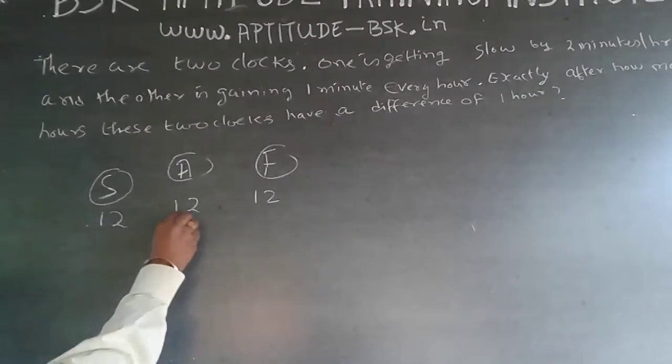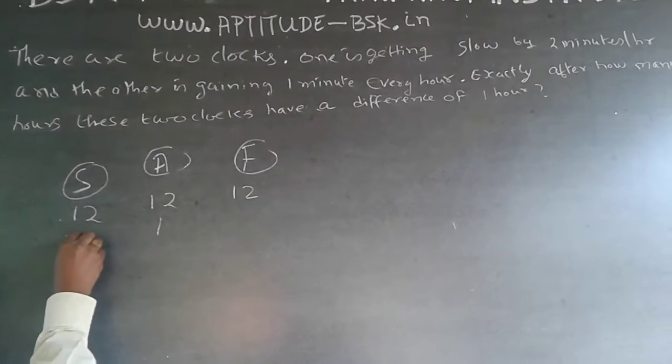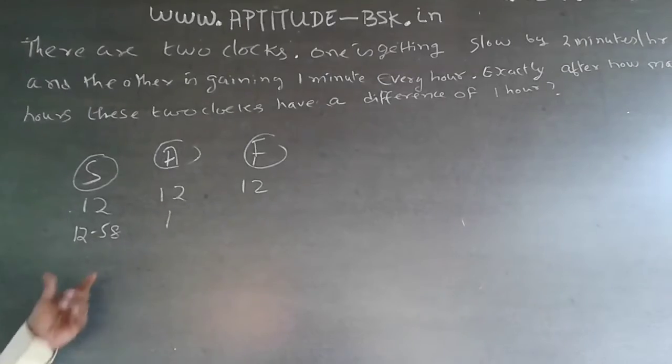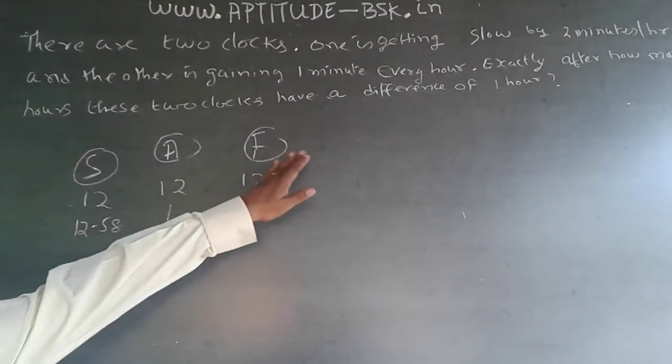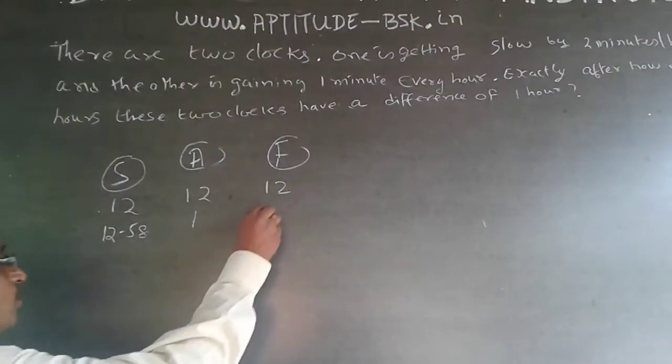So, when the actual time is 1 o'clock, this clock will show 12:58 because it is two minutes slow. Now, this is one minute fast every hour, so this will show 1:01.